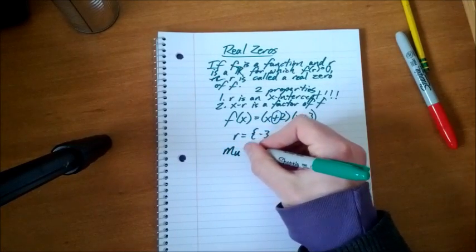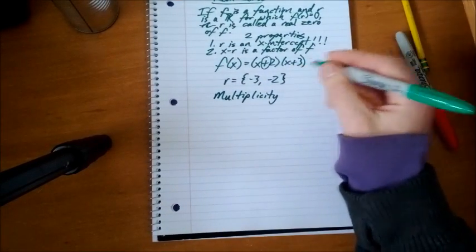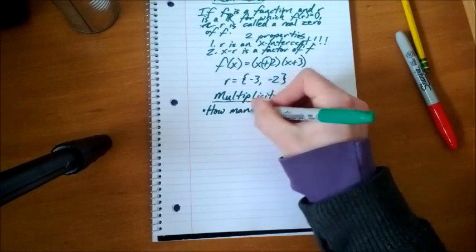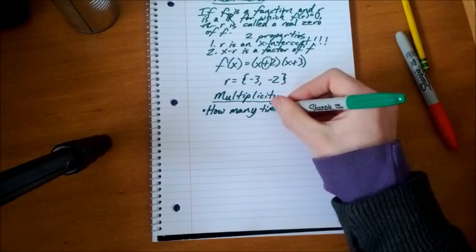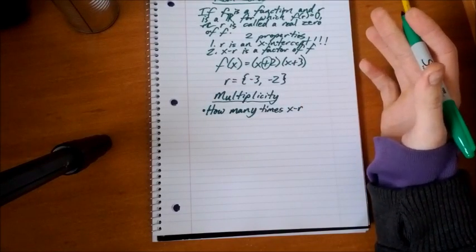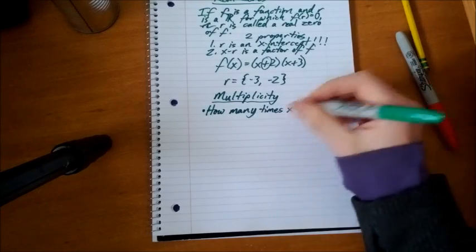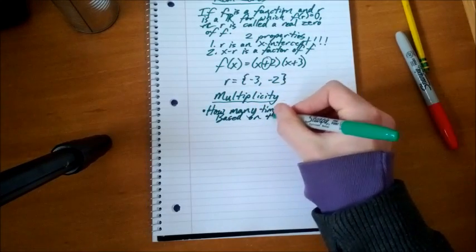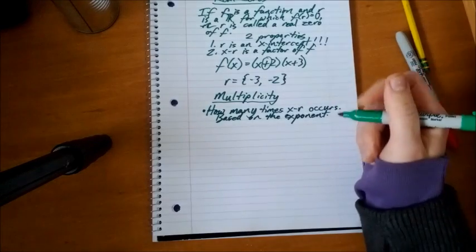Multiplicity. This is my wonderful definition that I made up myself. If you are a math expert and there's something terribly wrong with this, feel free and let me know in a friendly way. Multiplicity is how many times x - r occurs, and that is based on the exponent. It's how many times the factor occurs.